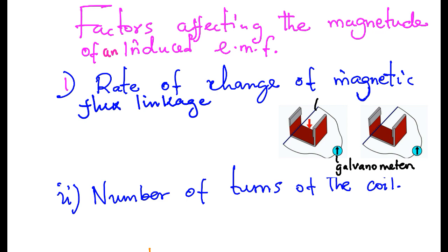From these observations, we say that one of the factors that affects the magnitude of an induced EMF is the rate of change of magnetic flux linkage.